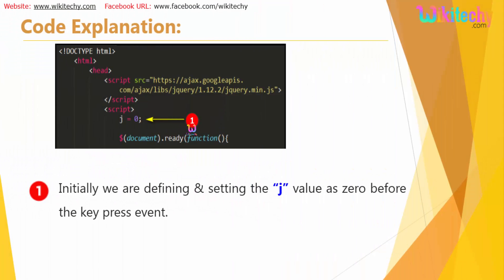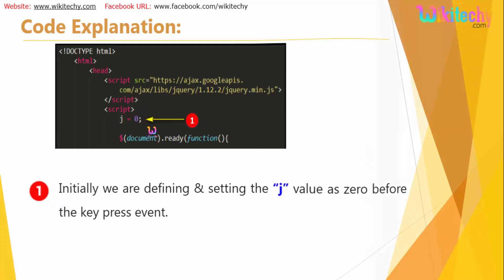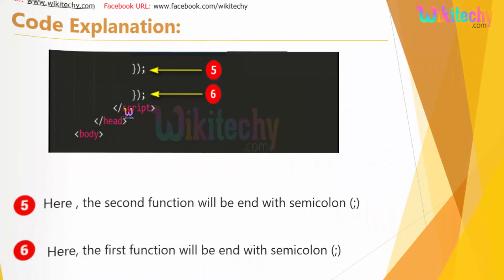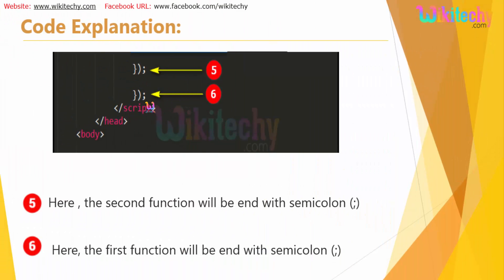To summarize the code: initialize variable j to 0. We use the element selector for input and apply the keypress function. Inside, we change the text of the span tag with the value of j, starting at 0, then increment j by 1 (j = j + 1). The closing brackets wrap both the keypress function and the document ready function.